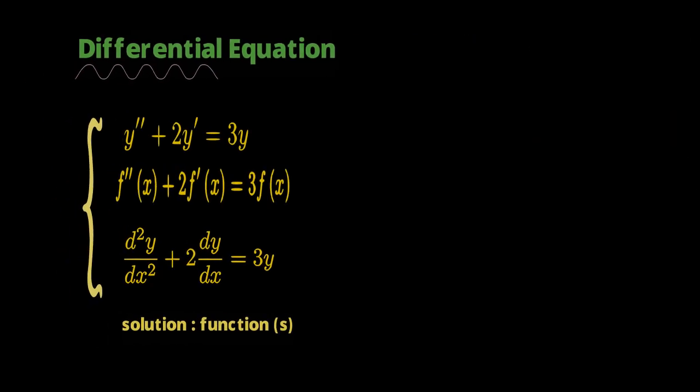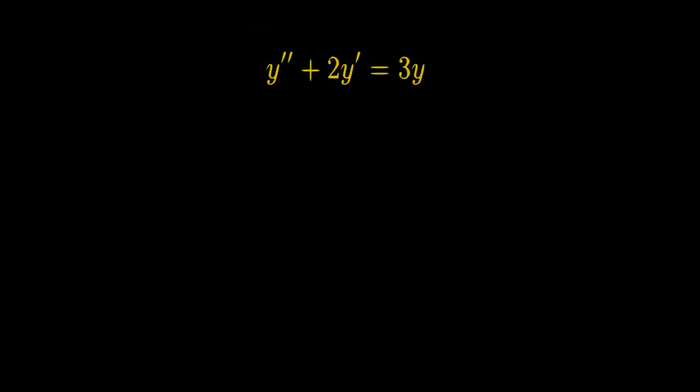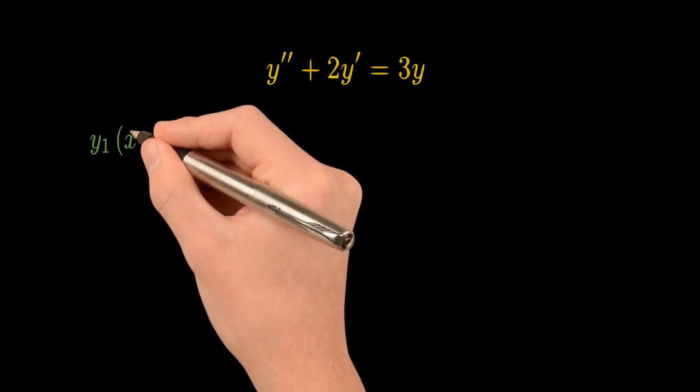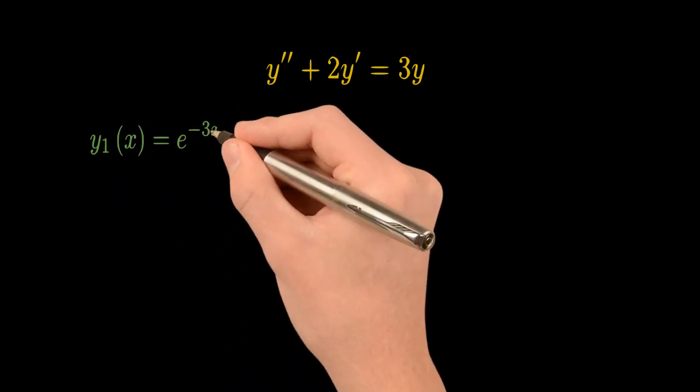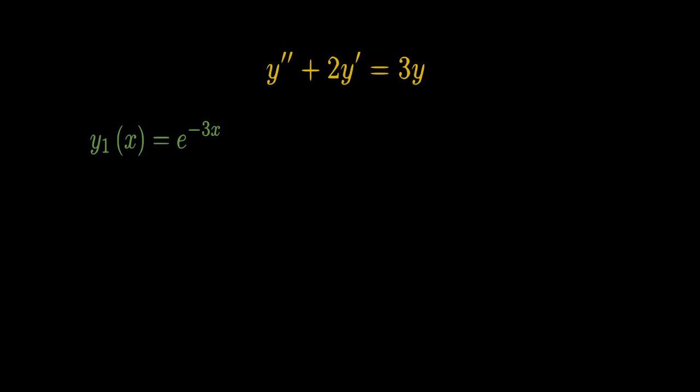Now let's make that a little more tangible. What would a solution to this differential equation actually look like? There is often more than one solution — a whole class of functions could be a solution. One solution is y₁(x) = e^(−3x). I encourage you to pause the video, find the first and second derivatives of y₁, and verify that it satisfies this differential equation.